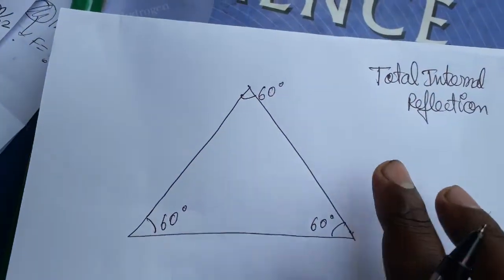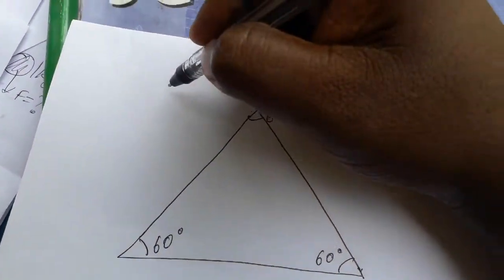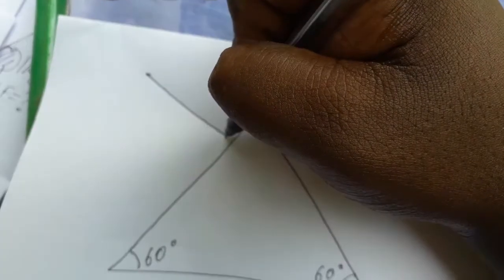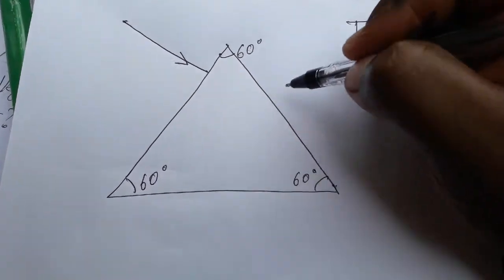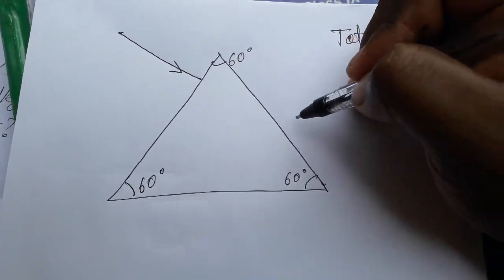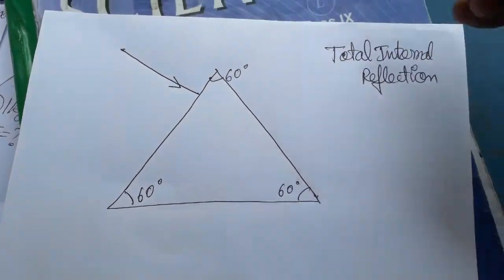Hello students, today we are going to see total internal reflection and how light is going to refract. I am taking a light example here. It is an equilateral prism where the light will be refracted or reflected. That's what we are going to find.